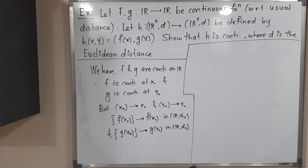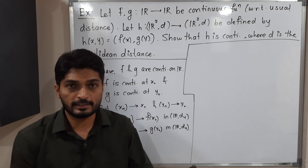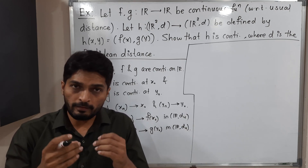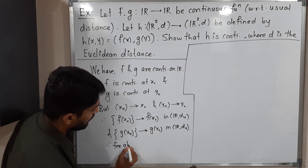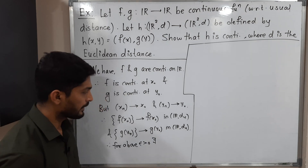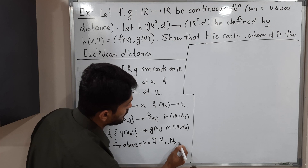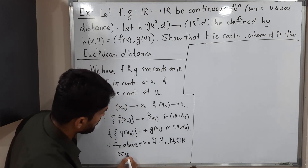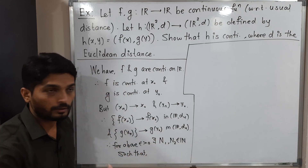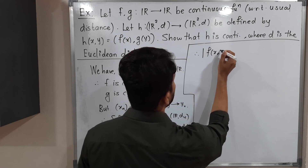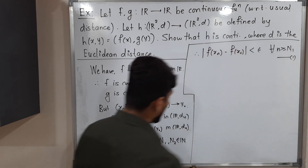For the above epsilon > 0, by the definition of these convergent sequences, there exist natural numbers N₁ and N₂ such that: |F(xn) − F(x₀)| < epsilon/√2 for all n ≥ N₁, and |G(yn) − G(y₀)| < epsilon/√2 for all n ≥ N₂. Note: instead of epsilon we write epsilon/√2, which still represents a small positive real number — this is just an adjustment to complete the proof neatly.